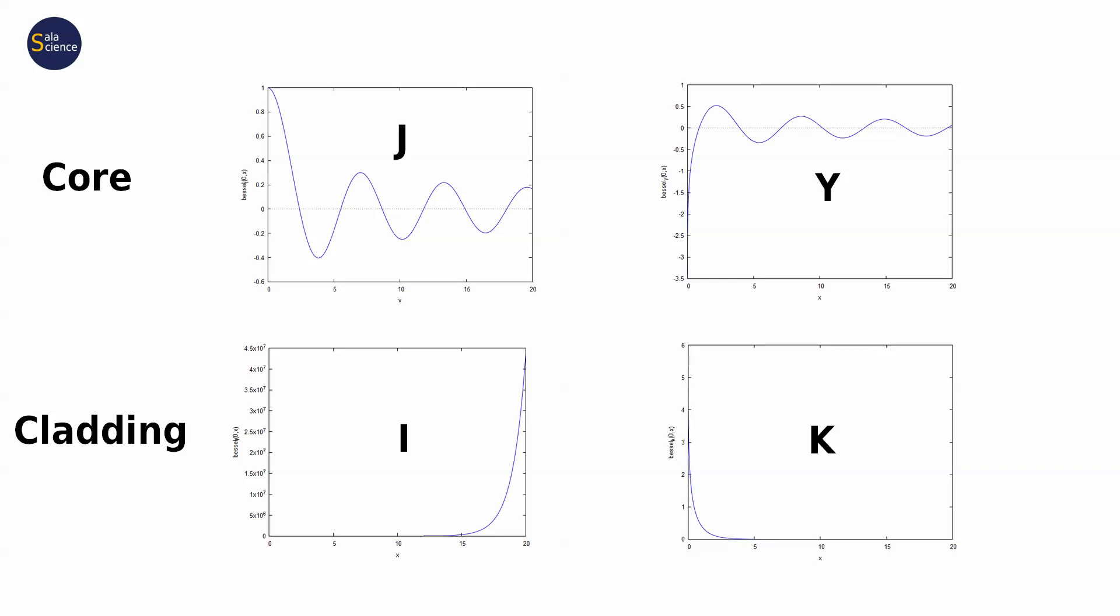The energy of such electric field would be infinite. So this function also cannot be a solution. Then, in the cladding, we leave only K-function, a modified Bessel function of the second kind, which approaches zero far from the core.